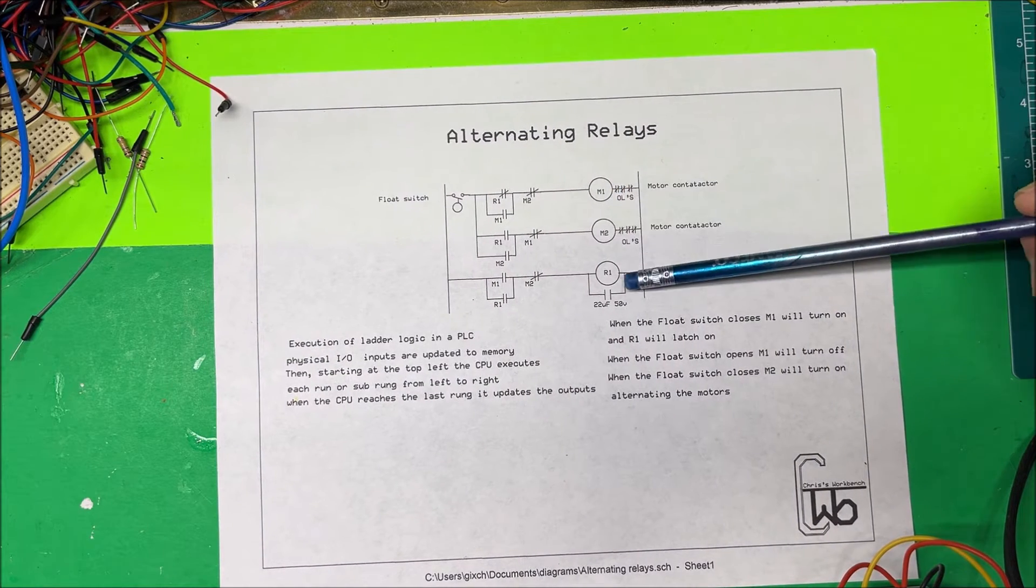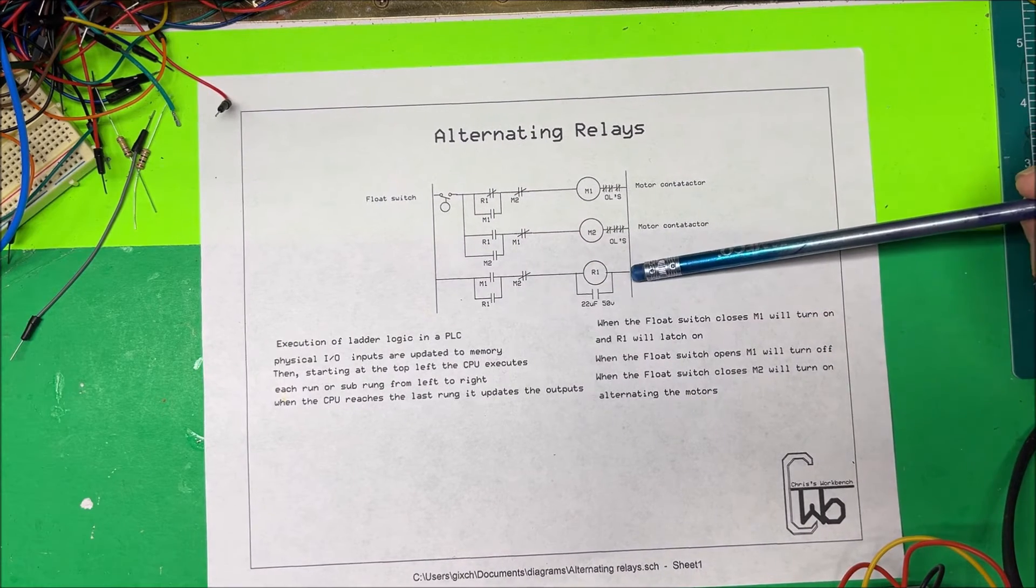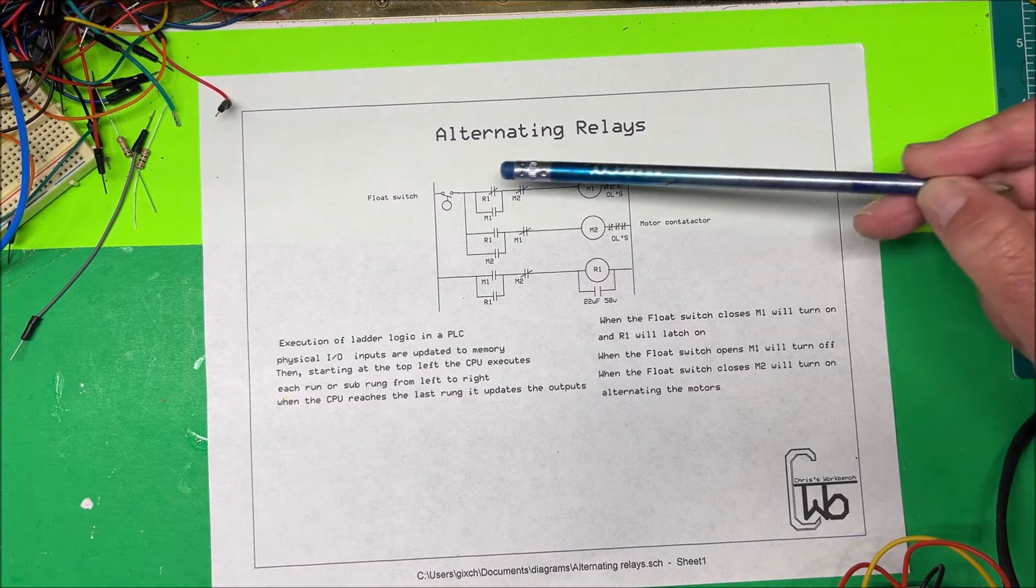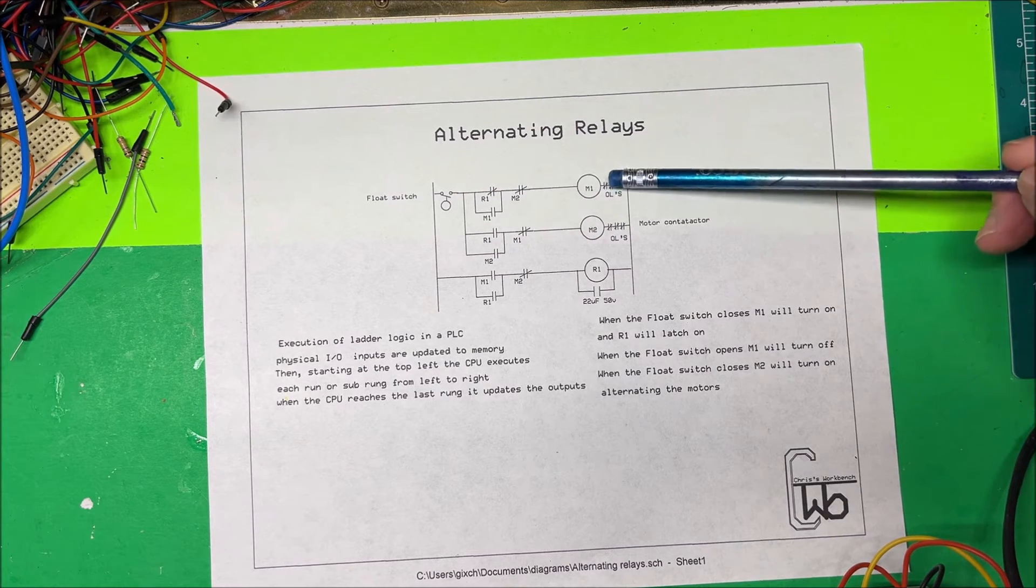When the float comes up and makes contact, the first pump is going to turn on. When that happens, R1 is going to lock in and latch in - it's right across the line there.